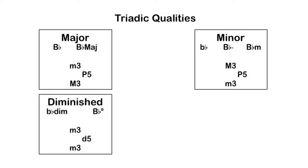The third type of triad quality is diminished. Diminished triads are often indicated with a lowercase letter and a degree sign, or an uppercase letter with the letters DIM afterwards. Diminished triads are constructed by placing a minor third between the root and third, and another minor third between the third and fifth.